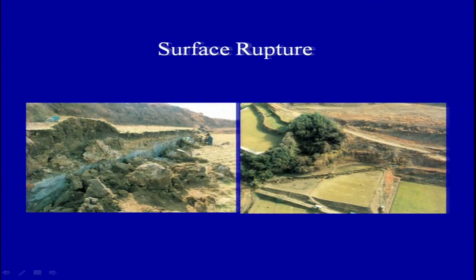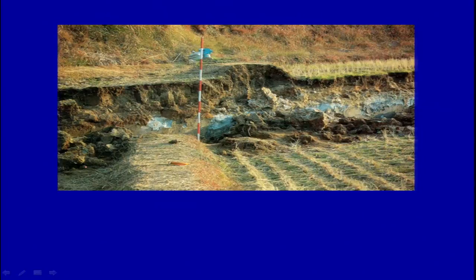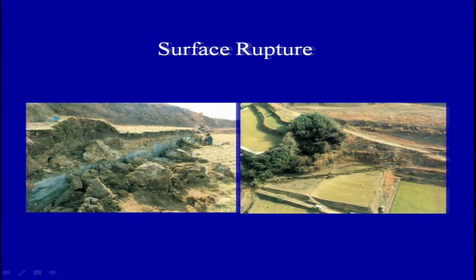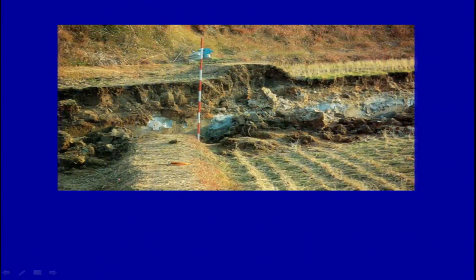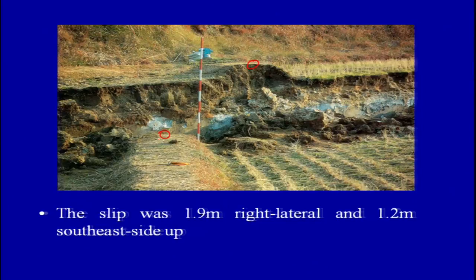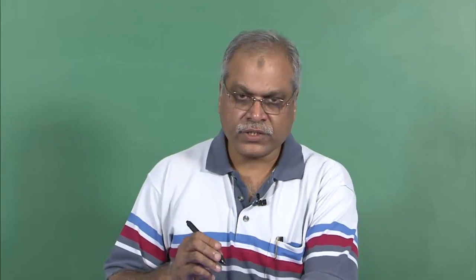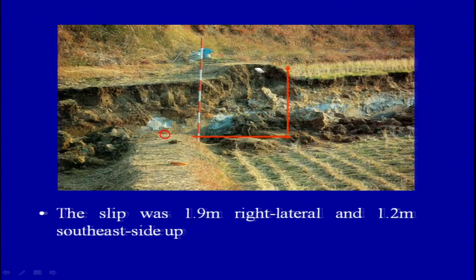In the ground photograph, one block has moved up — this is what we call thrust fault combined with strike-slip movement. Both were combined. This photograph is from this location. What has been seen here is these are two piercing points — this one and this one — which were together before the displacement took place. The movement was approximately 1.9 meters laterally and 1.2 meters vertically.